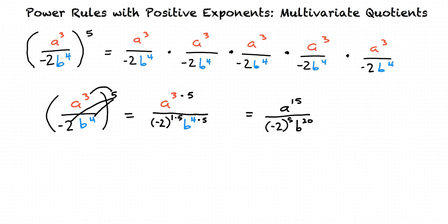Therefore, the final answer is a to the 15th power over negative 32b to the 20th power. This results in the same answer we would find by writing everything out and multiplying.